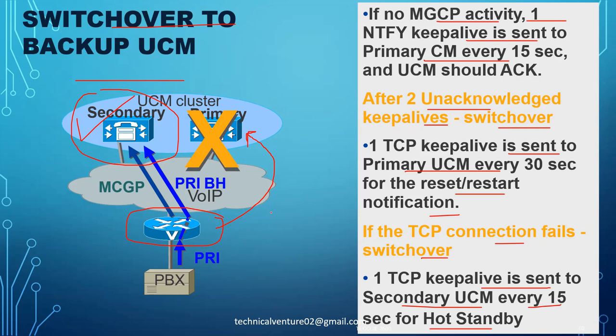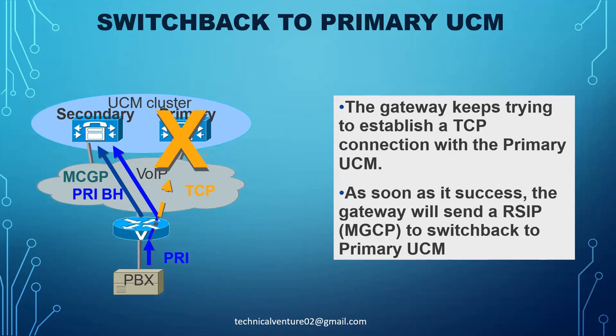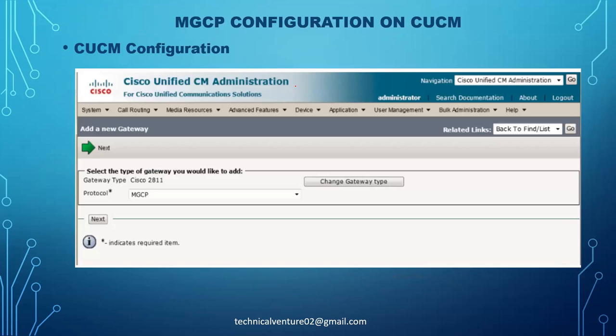Once on the primary server, it sends keep-alive messages to the secondary for hot standby. The gateway keeps trying to establish a TCP connection with the primary CUCM. Once successful, the gateway sends an RSIP message to switch back to the primary CUCM server.